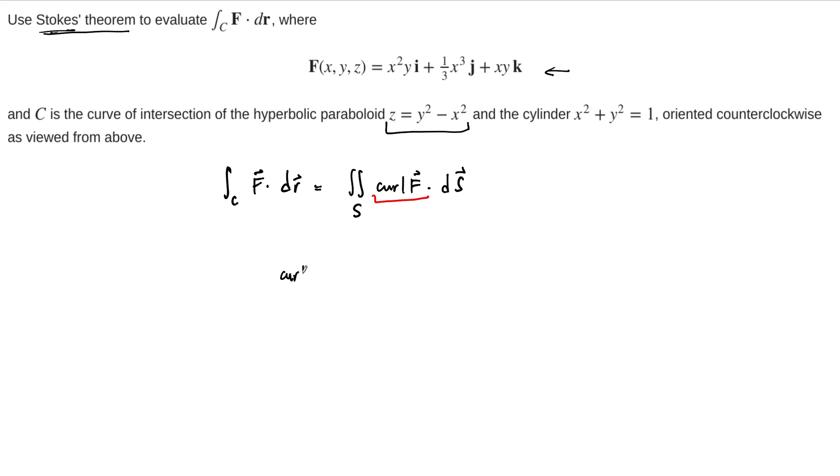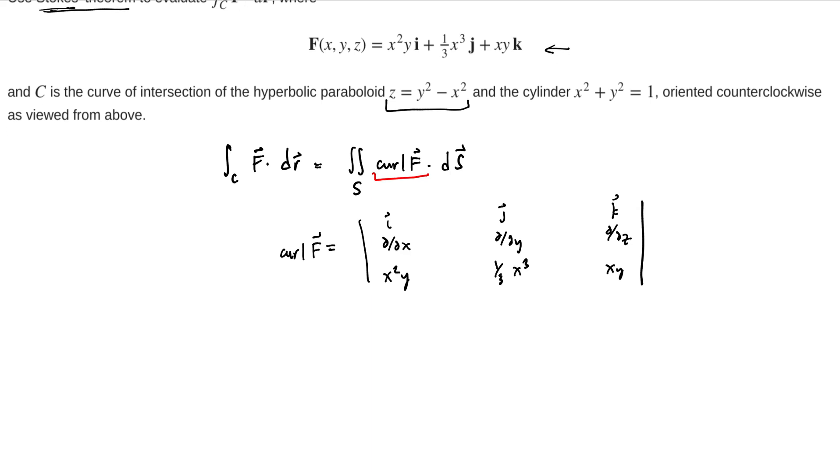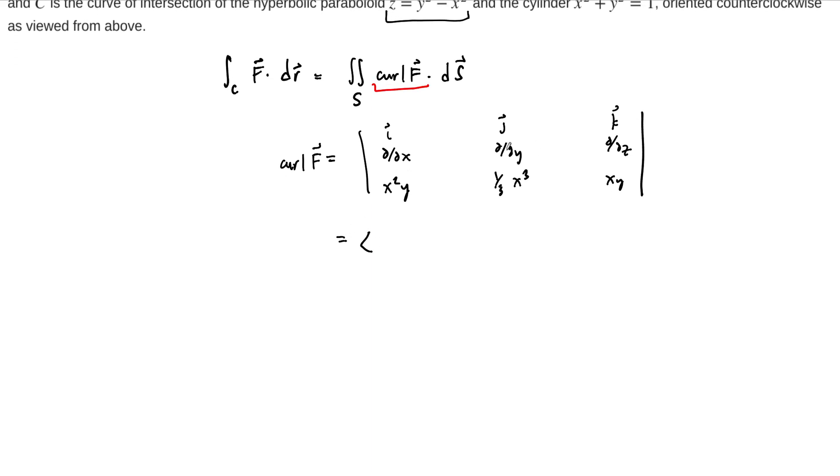So the curl of this vector field f is the formal cross product. I always write this out because for me personally, it's easier to remember the method than it is to remember the formula. So there's the formal cross product. Now we need to actually compute this thing to get the curl vector. We take our partial derivatives this way. The y derivative of xy is just x minus 0, so that's just x in that component. In the second component, we have 0 minus y, so that's minus y. And then finally, here we have x squared minus x squared, so that's going to be 0.